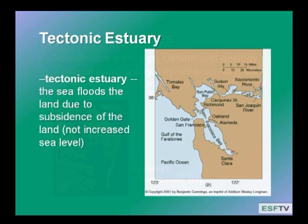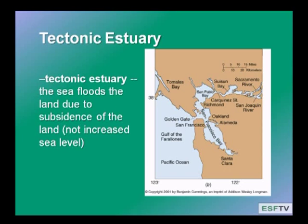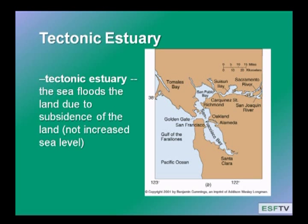The second type of estuary is a tectonic estuary. In tectonic estuaries, you also have the sea flooding into a region, but in this case, tectonic motion of the earth has caused subsidence of the land. A good example is the San Francisco Bay estuary. You all know there are earthquakes in California, and in the geologic past, earthquakes shook the unconsolidated sediments of the San Francisco Bay and caused them to fall and sink, and seawater flooded in.